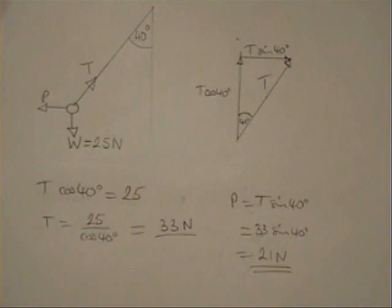So it was a pulling force of 21 newtons that caused the monkey to swing out to an angle of 40 degrees.